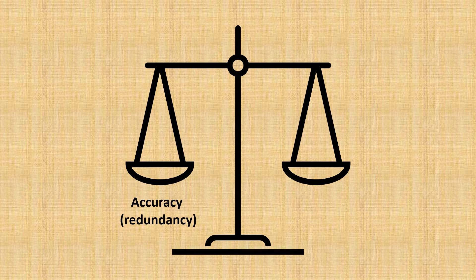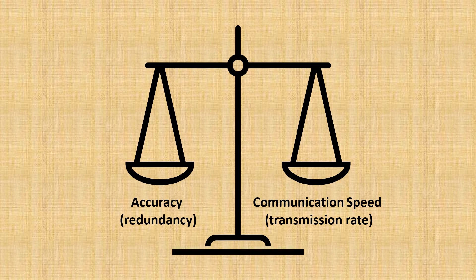Now, how do we deal with the fact that our channel can distort our message? We have a tradeoff. The more redundancy we add to make sure the correct message is received, the slower the transmission will be. This is an issue we need to solve in order to properly send our text message.